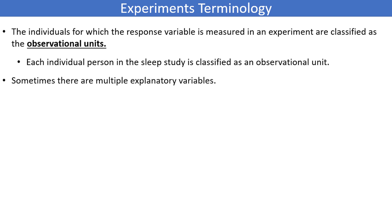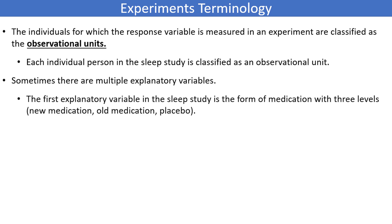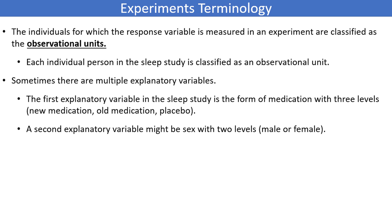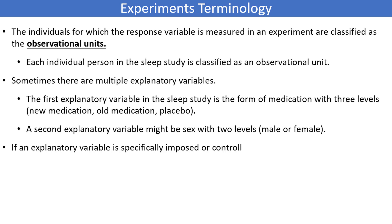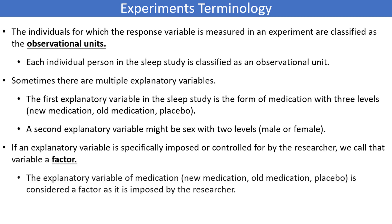Sometimes there might be multiple explanatory variables. In our insomnia example, we had the explanatory variable of form of medication with the three levels of new medication, old medication, or placebo. A second explanatory variable might be sex, with two levels — either male or female. If an explanatory variable is specifically imposed or controlled for by the researcher, we call that variable a factor. The explanatory variable of medication is considered a factor, as it is imposed by the researcher.